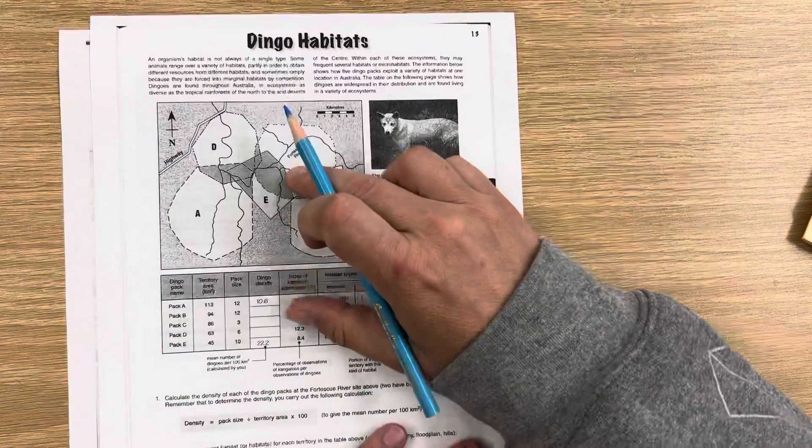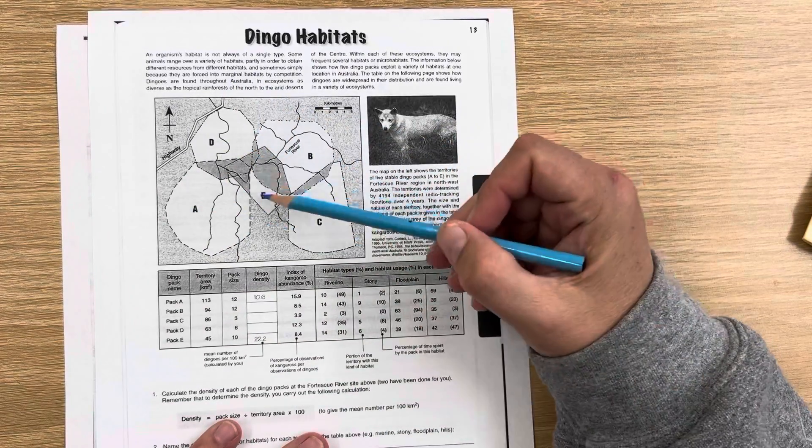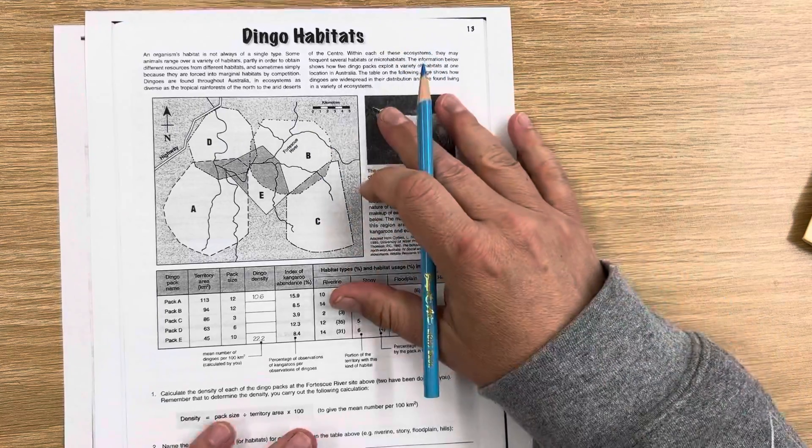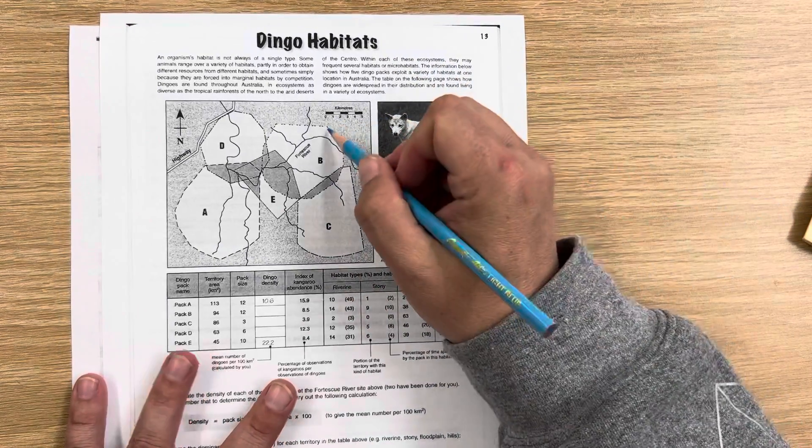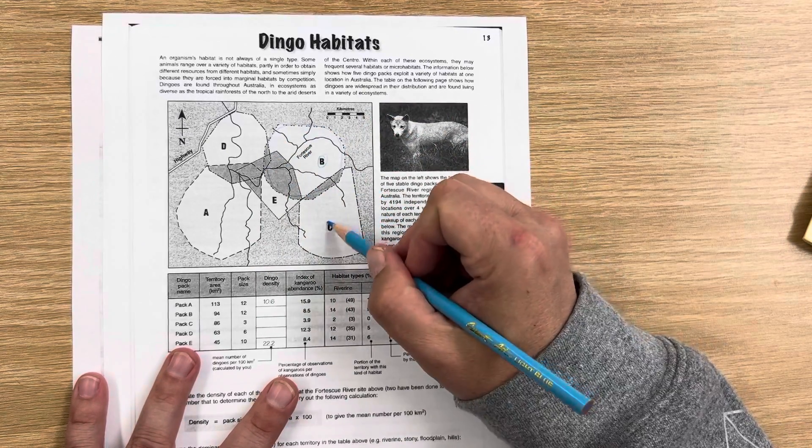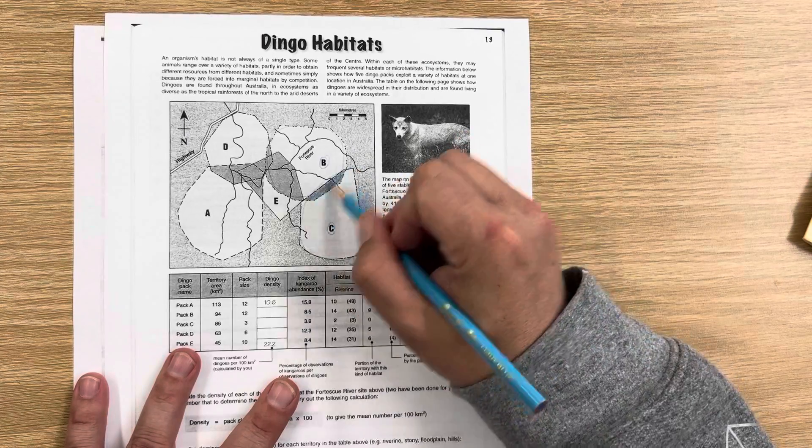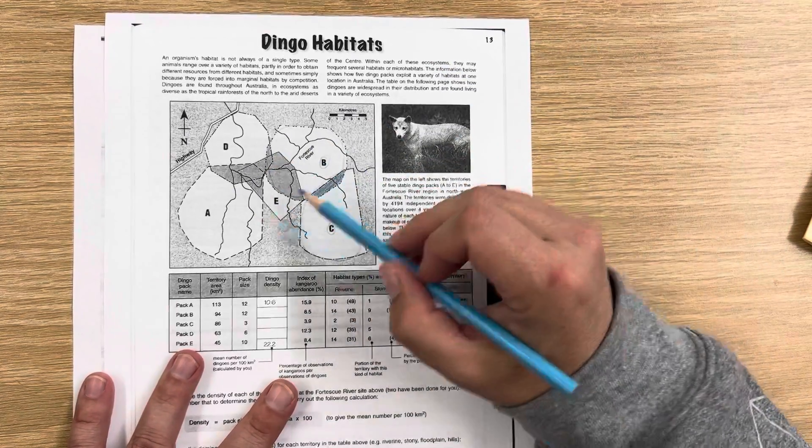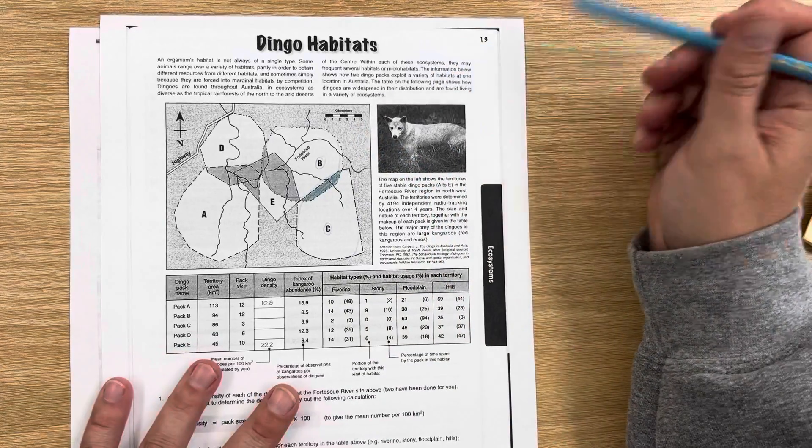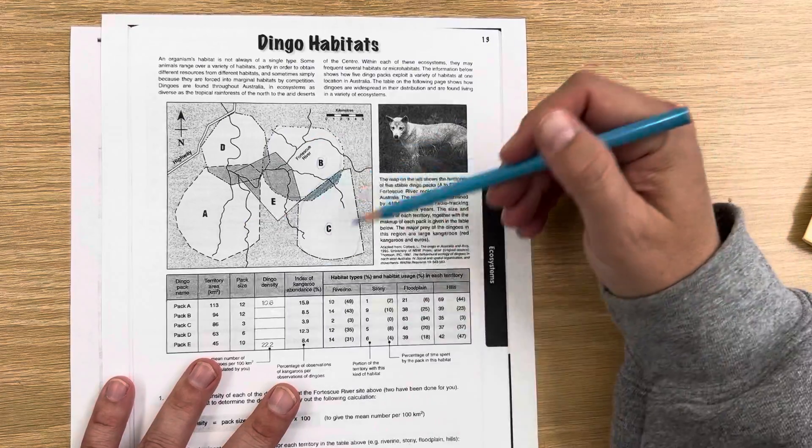Basically it shows a map here and the map has one, two, three, four, five different dingo populations. And it shows that some of them overlap. Like dingo population B overlaps with dingo population C right in this shaded region here. So they all overlap to some extent. And it talks about that overlapping as a competition of resources and trying to find resources in different areas.